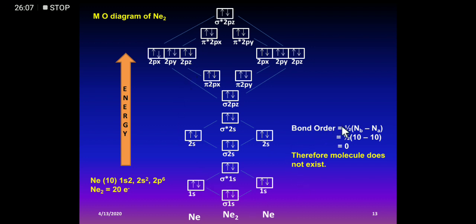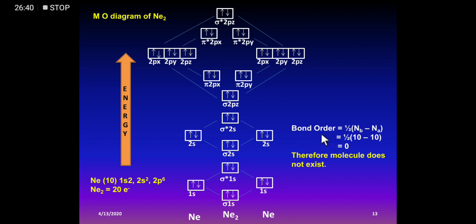Calculating bond order for Ne2: Bond order = ½ × (Nb − Na). Bonding electrons (without star): σ(1s)² + σ(2s)² + σ(2pz)² + π(2px)² + π(2py)² = 10. Anti-bonding electrons (with star): σ*(1s)² + σ*(2s)² + π*(2px)² + π*(2py)² + σ*(2pz)² = 10. Bond order = ½ × (10 − 10) = 0. Therefore, Ne2 does not exist — this explains what valence bond theory could not: Ne2 molecule does not exist because bond order = 0.